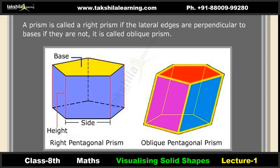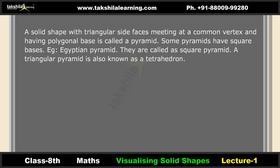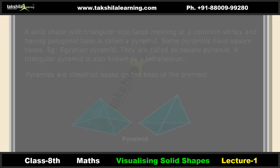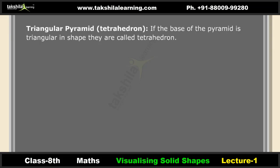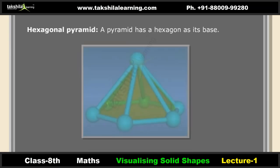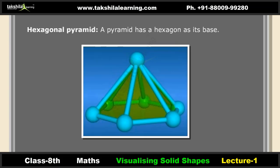A pyramid is a solid shape with triangular side faces meeting at a common vertex and having a polygonal base. Some pyramids have square bases, such as the Egyptian pyramid — these are called square pyramids. A triangular pyramid is also known as a tetrahedron. Pyramids are classified based on their base: a triangular pyramid (tetrahedron) has a triangular base, a square pyramid has a square base, and a hexagonal pyramid has a hexagon as its base.